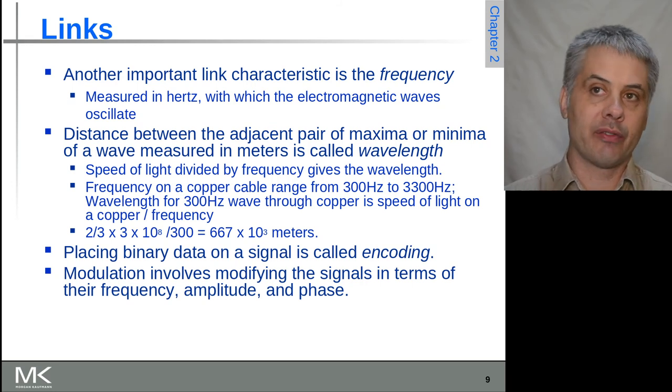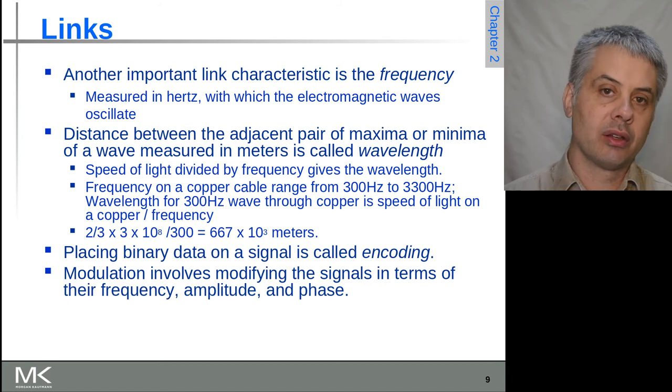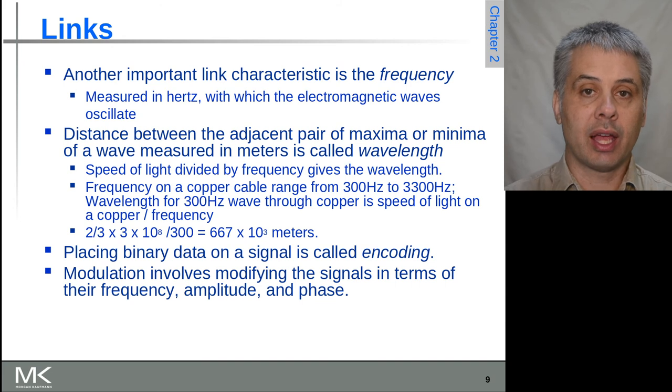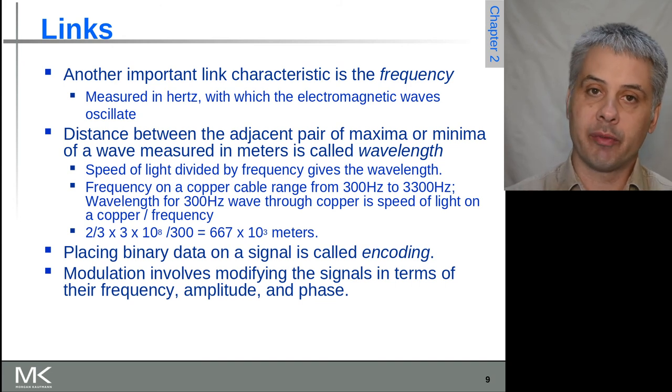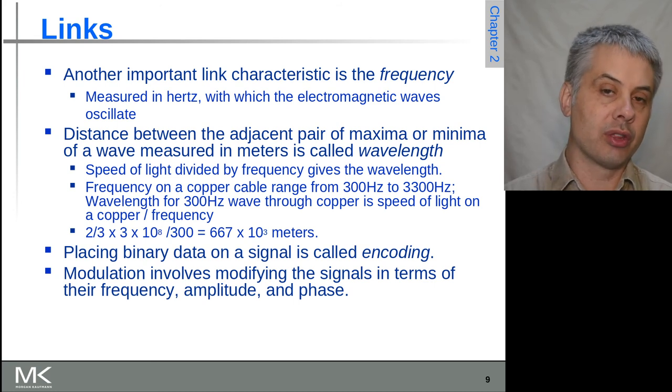If we're thinking about visible light, we're talking about very much sub-millimeter wavelengths. Whatever frequency or link technology we're using, at the end of the day we actually need to have some way of putting binary data to transfer it over this link. This is called encoding—we encode the data onto the signal—and modulation is the mechanism by which we do that encoding.